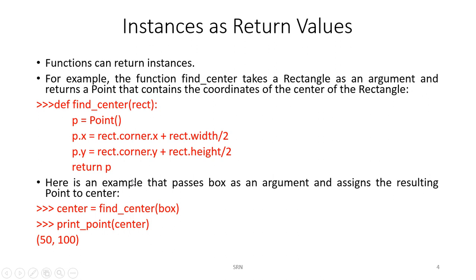Instances can be returned as values from functions. Here is an example: we define a function find_center that takes a rectangle as an argument and returns a point containing the coordinates of the center of the rectangle. Inside the function, p = Point() creates a new point object, and we assign values to p.x and p.y to represent the center.